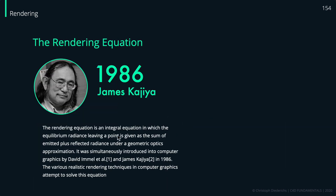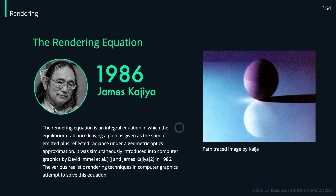Moving forward to 1986, James Kajiya revolutionized computational rendering. He invented the so-called rendering equation — an integral equation that handles all those calculations — and also invented a method called path tracing. This is the first image Kajiya rendered with the path tracing algorithm.